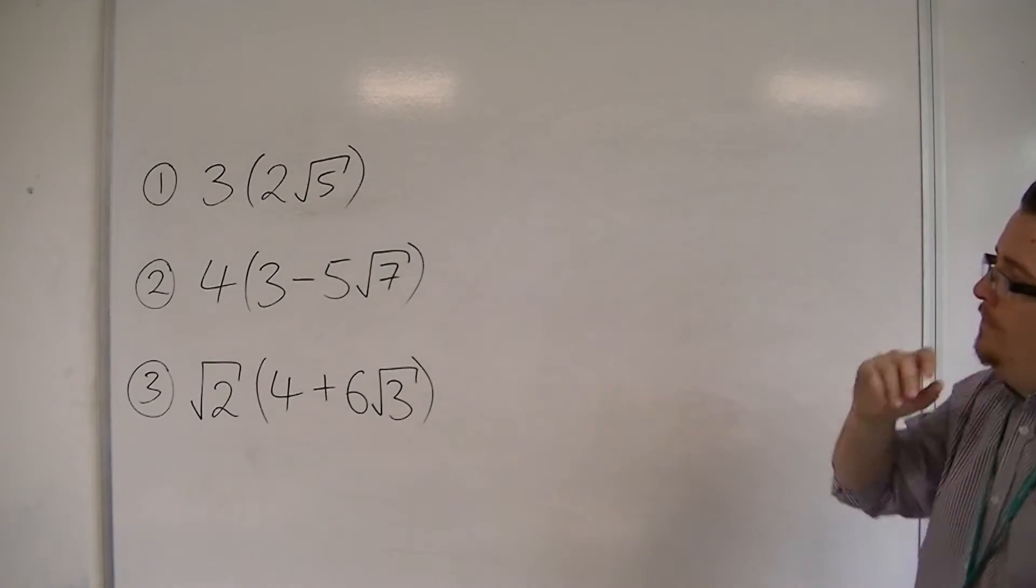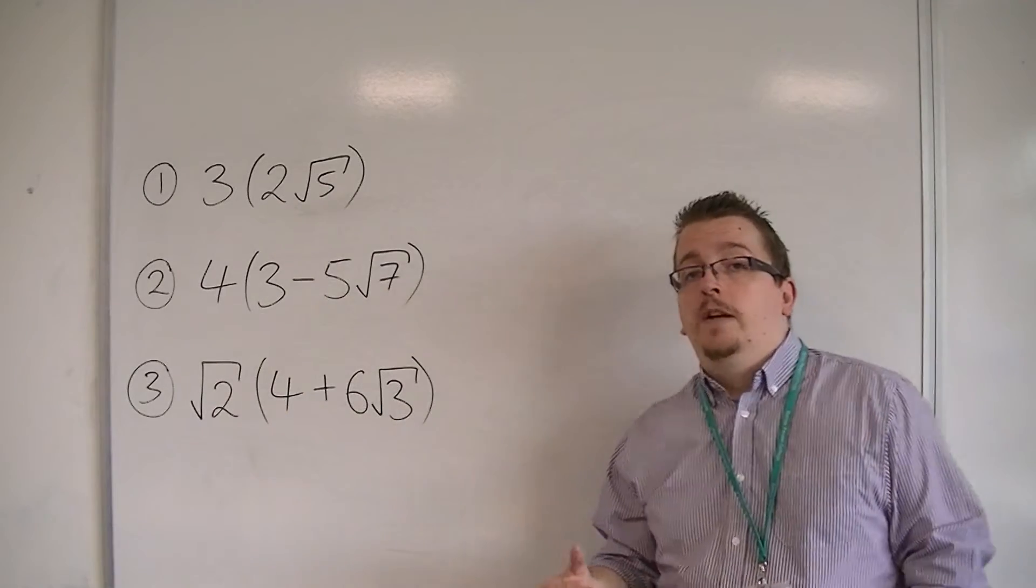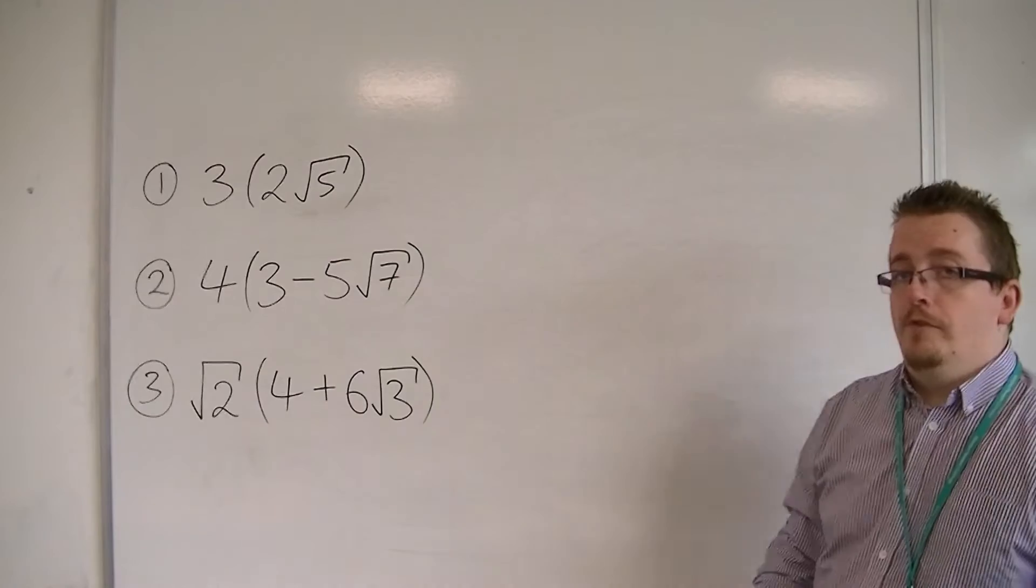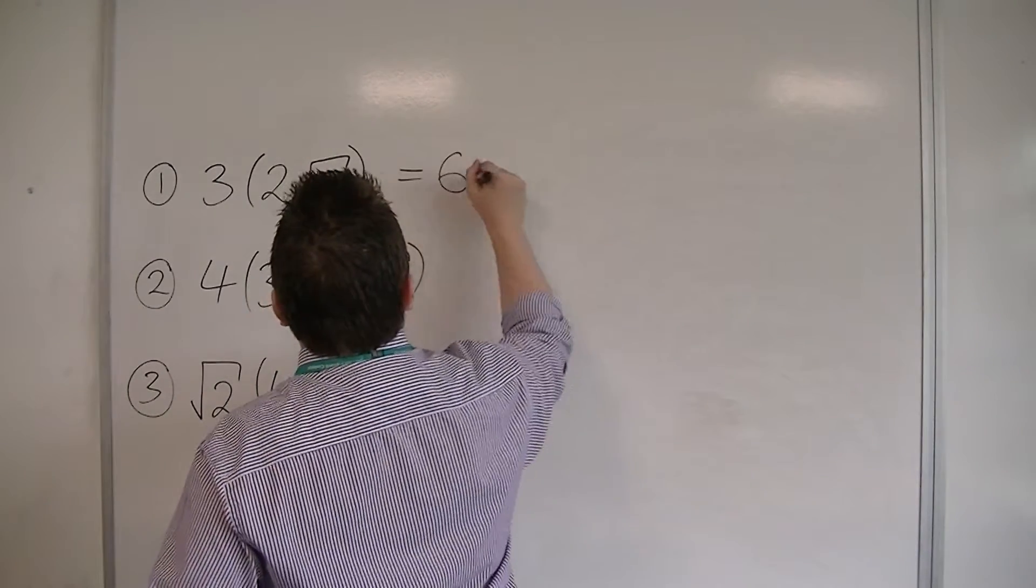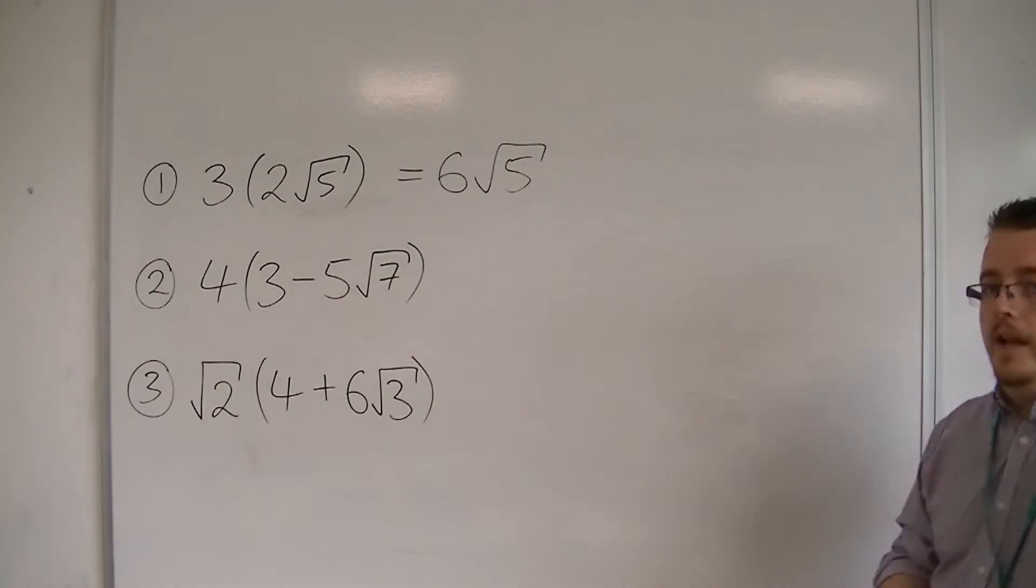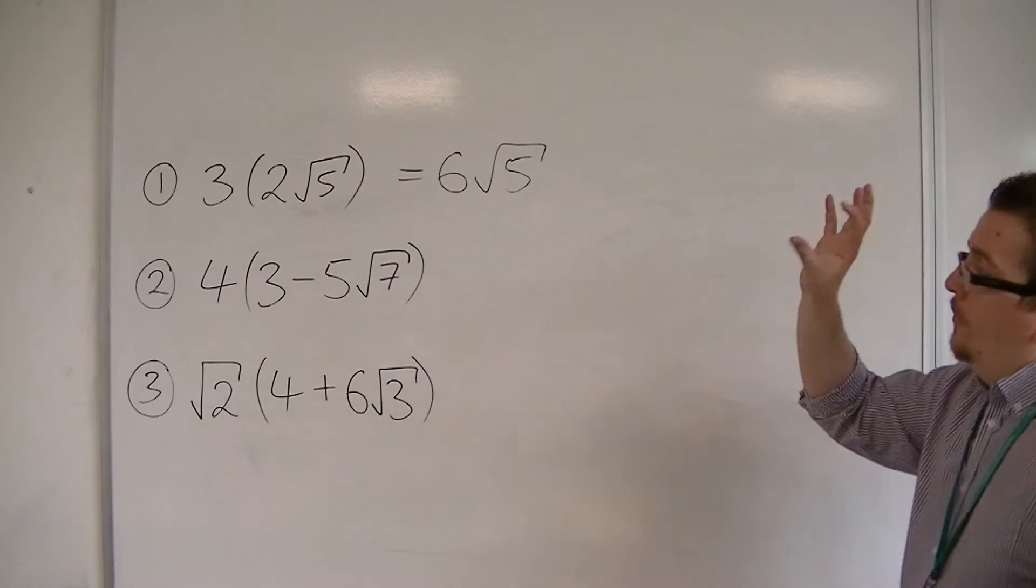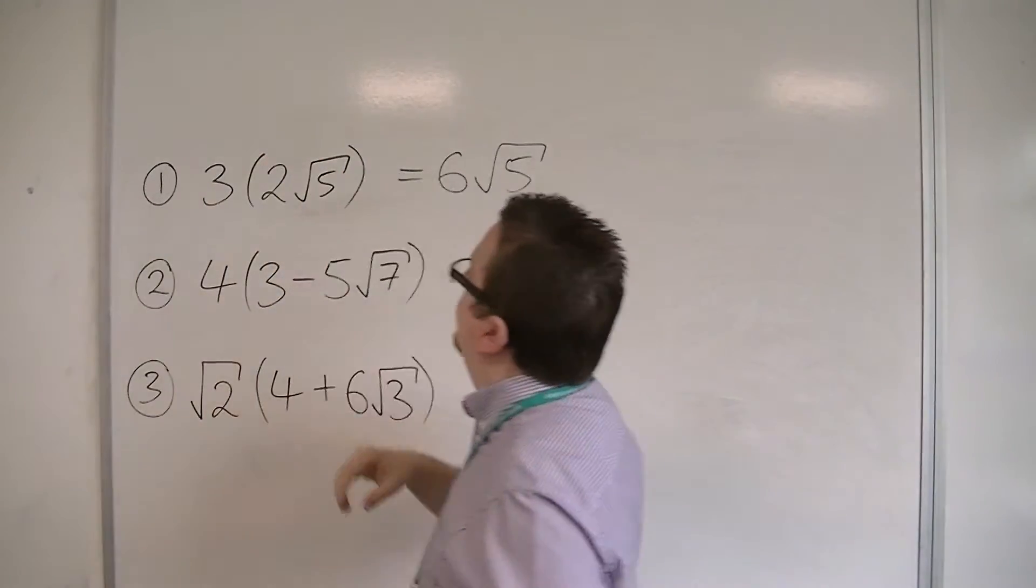So let's look at number one. We've got a three on the outside of the bracket, and inside the bracket we've got two root five. So effectively what that's saying is that I want three lots of two root five. So that must be six root five. Three lots of two root five. The three and the two are multiplied together, the root five stays as is.